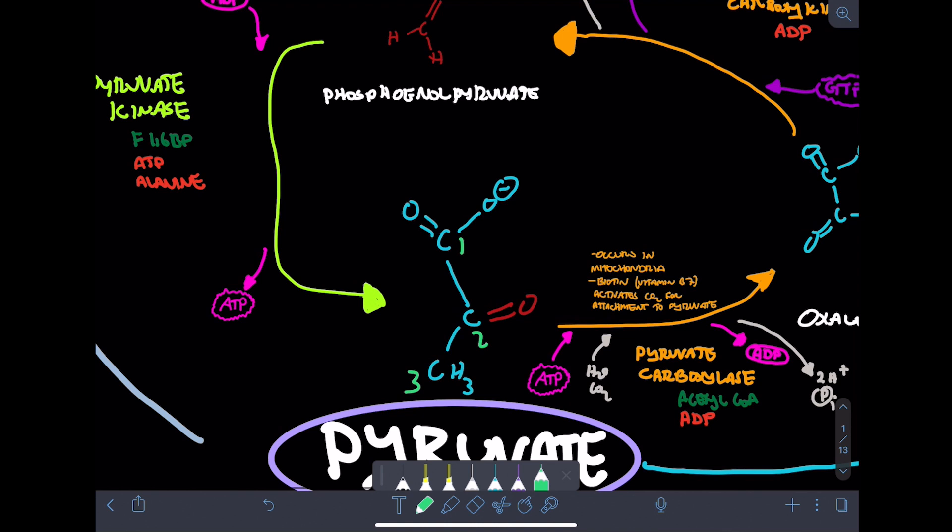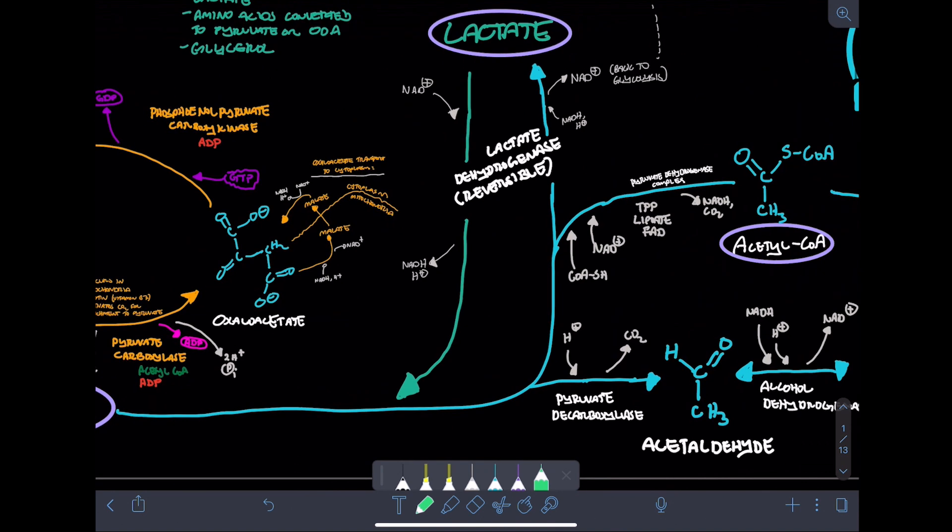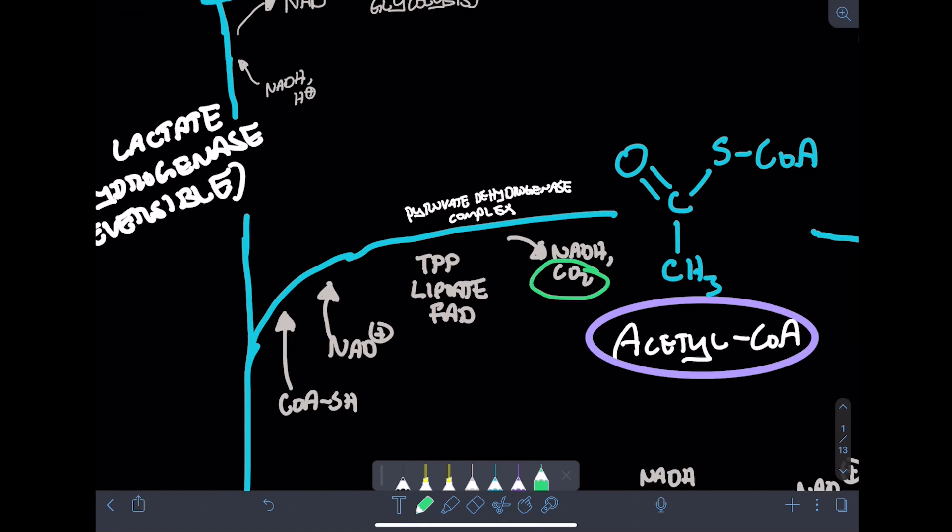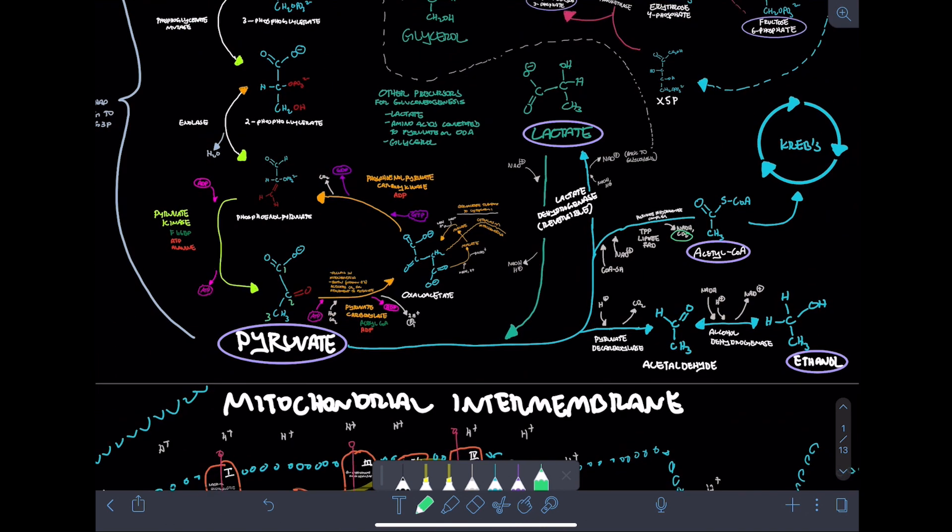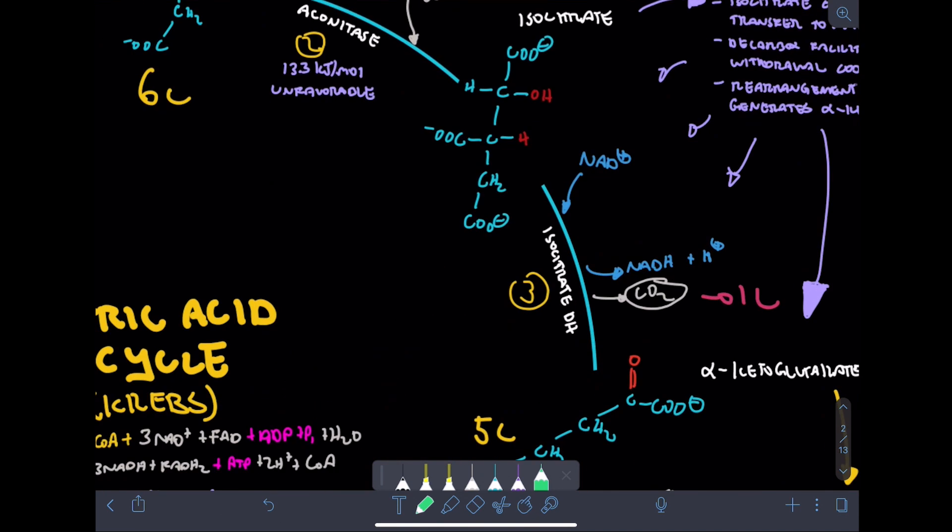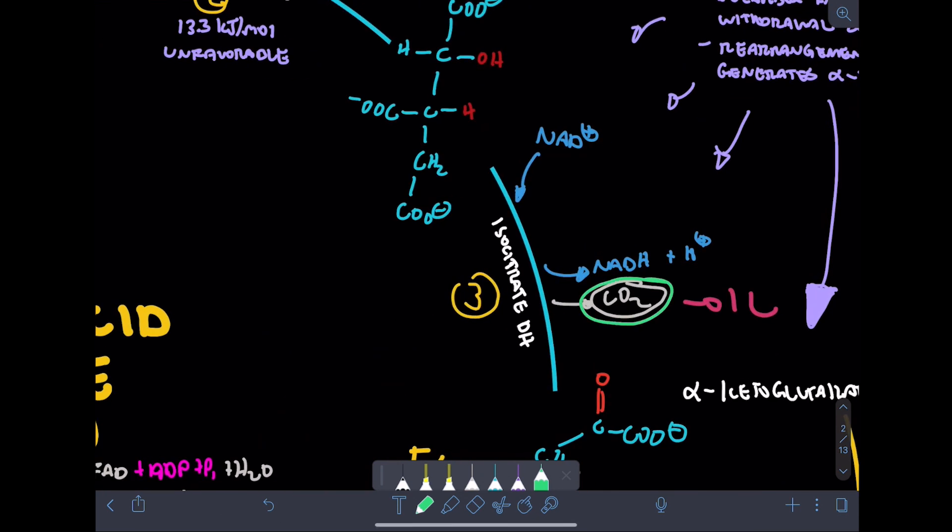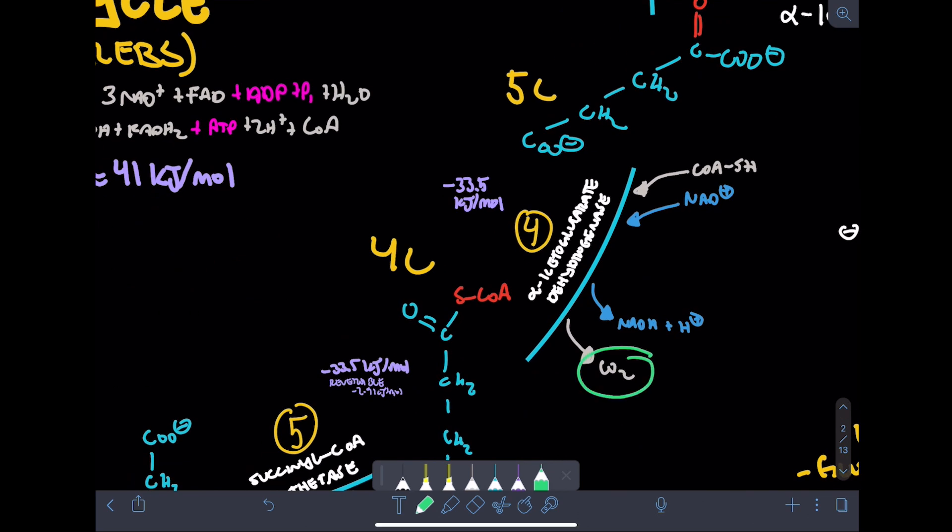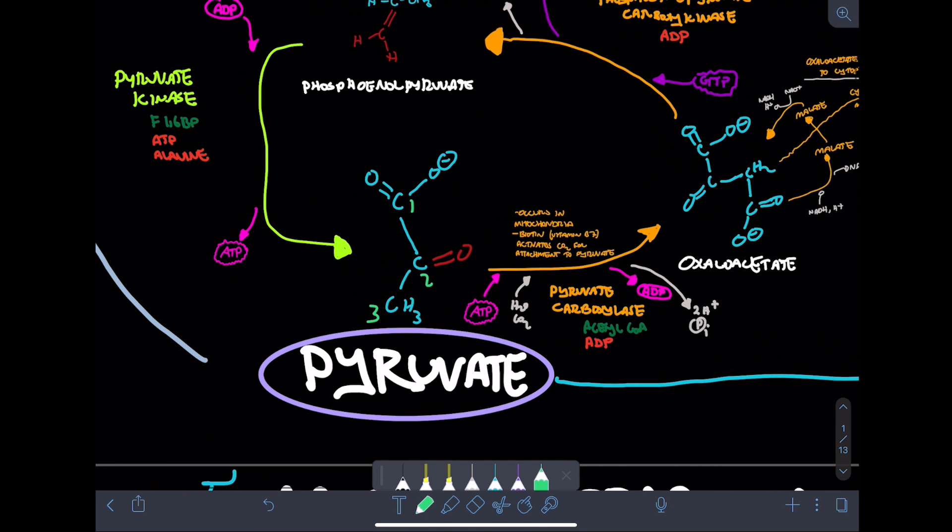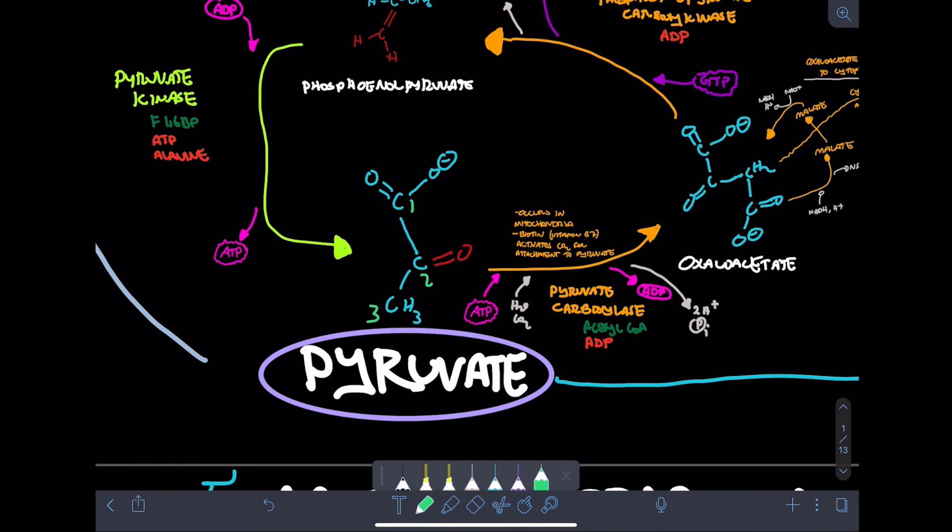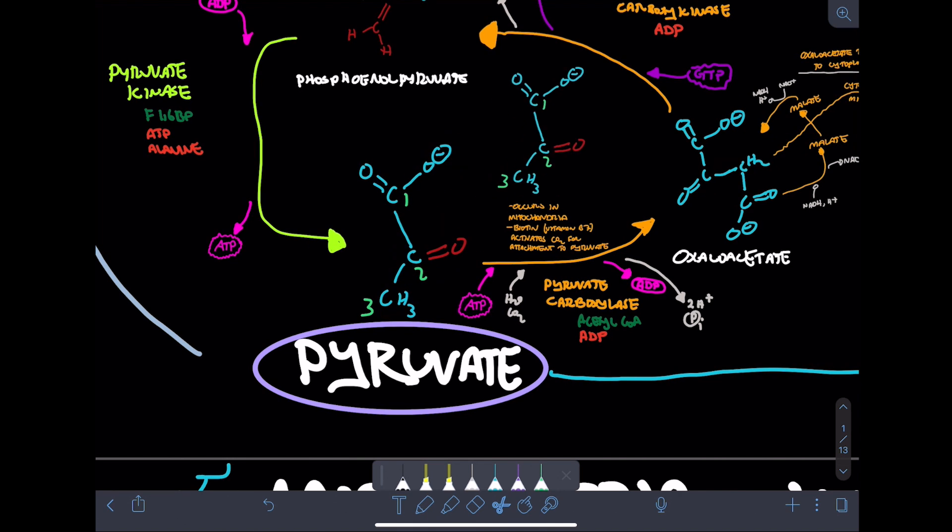Now pyruvate loses a carbon during conversion to acetyl-CoA in the form of CO2 that we eventually exhale. A carbon is lost again in the Krebs cycle during oxidation of isocitrate to alpha-ketoglutarate, and a third carbon is lost in the oxidation of alpha-ketoglutarate to succinyl-CoA. So that's three carbons from pyruvate accounted for in being lost as CO2. Now because two pyruvate are actually made from one glucose molecule during glycolysis, those three CO2 molecules are multiplied by two to yield six CO2 that's actually produced as a byproduct of glucose metabolism.